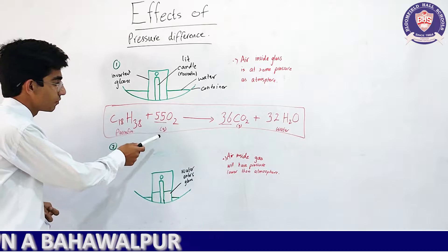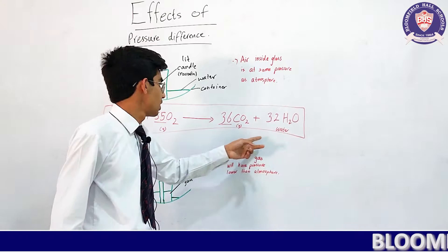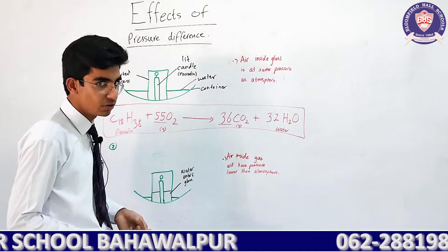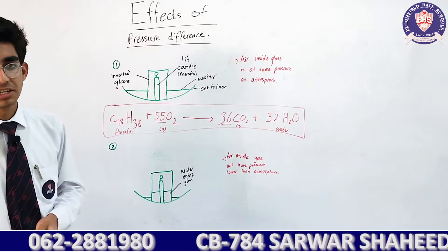When the reaction begins, the paraffin candle will react with oxygen, and carbon dioxide and water will be produced. However, the moles of carbon dioxide produced will be lower as compared to the moles of oxygen consumed.